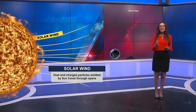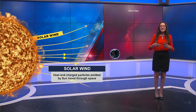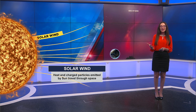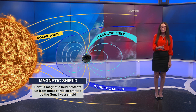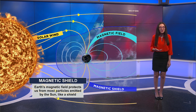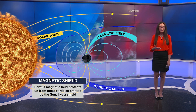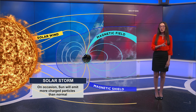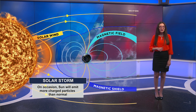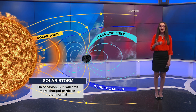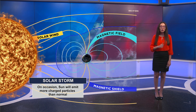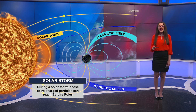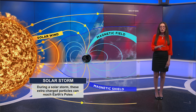So the first component is something called the solar wind. Essentially what happens is that heat and charged particles are emitted from the sun. Now usually Earth's magnetic field protects us from those charged particles. That's why we don't always see the northern lights. But sometimes during what we call a solar storm, the sun actually emits more charged particles than normal, and some of those extra charged particles are able to make it to the poles of the Earth.